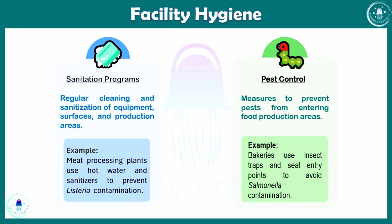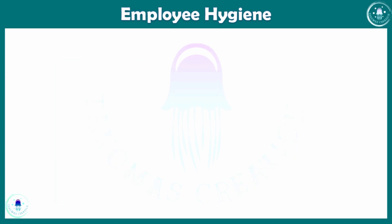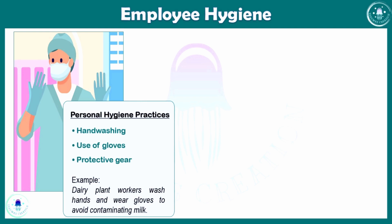Employee hygiene is just as important as facility hygiene. The first aspect is personal hygiene practices — the employees working in the industry must maintain cleanliness, including hand washing and use of gloves and protective gear. For example, dairy plant workers wash hands and wear gloves to avoid contaminating milk.